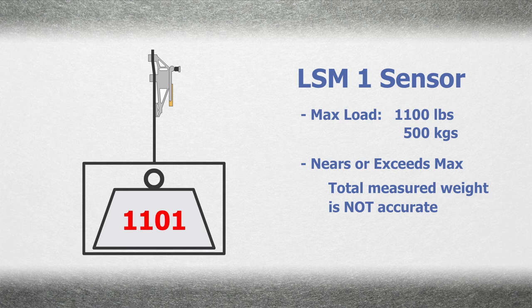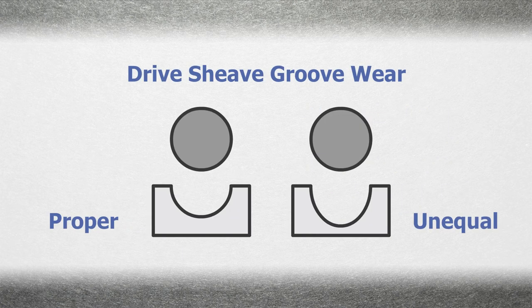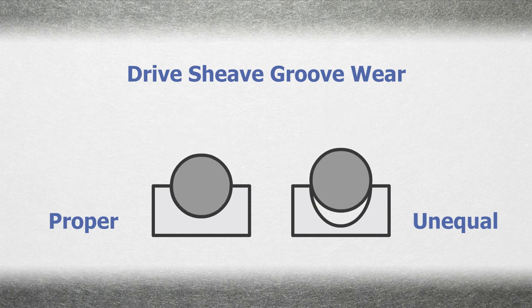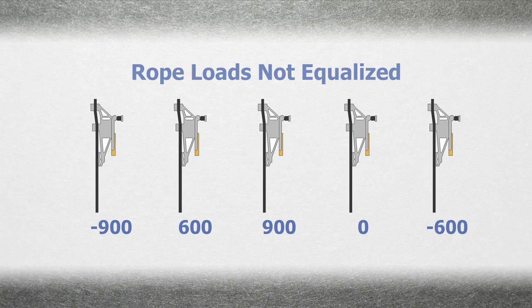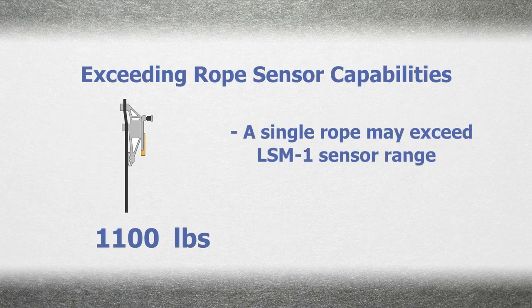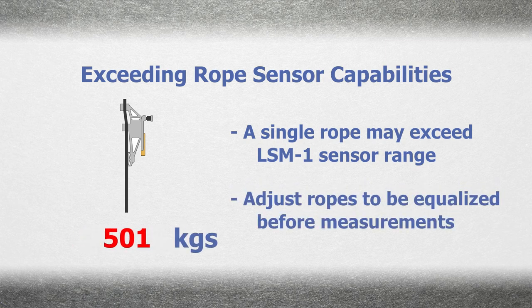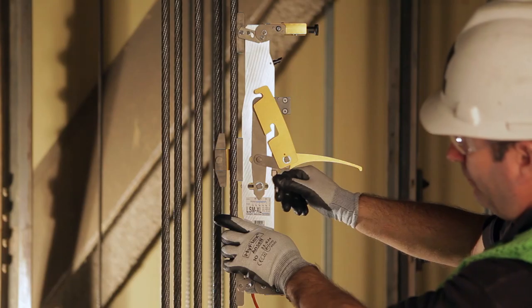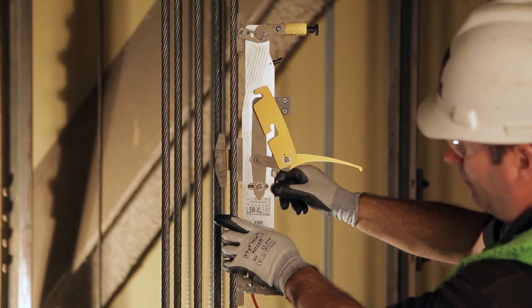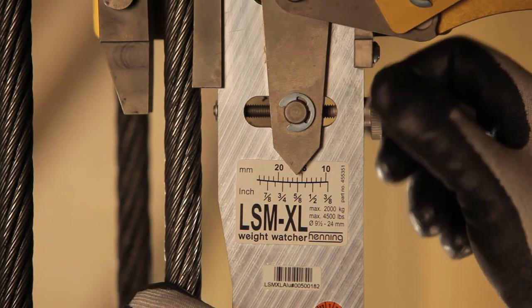This is particularly possible if, for example, you are working with an older system where the grooves in the drive shiv might have worn unequally and rope loads are not equalized. Again, when rope loads are not equalized, the load on a single rope may exceed the 1,100 pound limit for LSM1. If this occurs, the rope load should be equalized prior to the measurement of car weight. In situations where rope loads cannot be equalized, to obtain accurate results with Mobile Weight Watcher, use the LSMXL sensor.